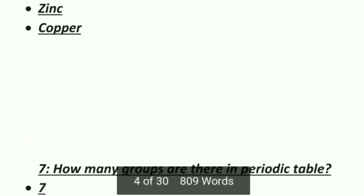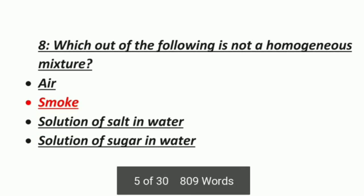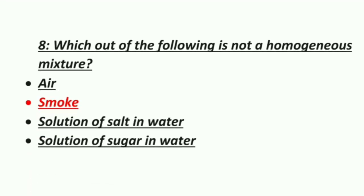Seventh MCQ: how many groups are there in the periodic table? Option 1: 7, Option 2: 16, Option 3: 18, Option 4: 22. The correct answer is 18 — there are 18 groups in the periodic table.